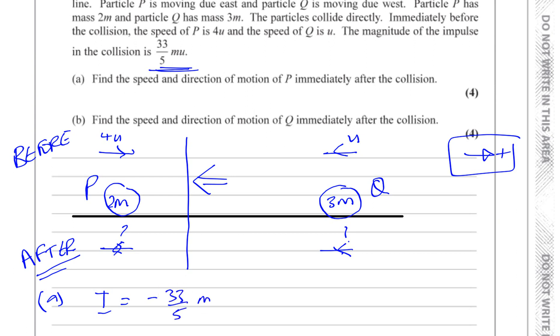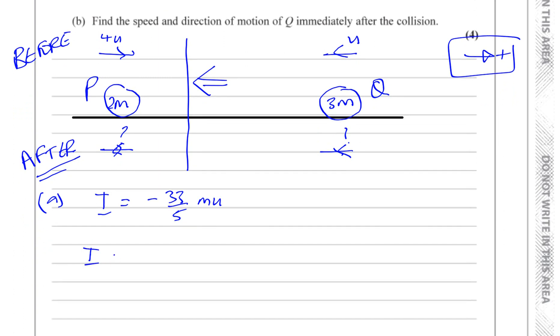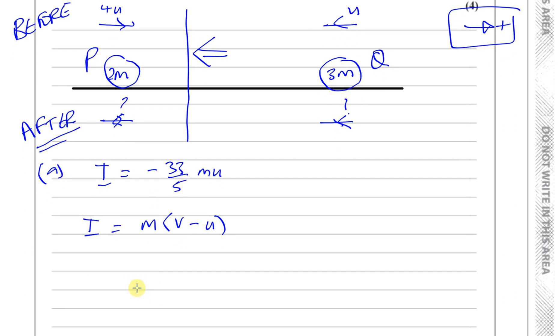So what we can do is we can say that the impulse is equal to the change in momentum, I equals m(V minus u). So we know in this case that I is negative 33 over 5 and m is 2m. And the speed after the collision is what we have to find, which is V.